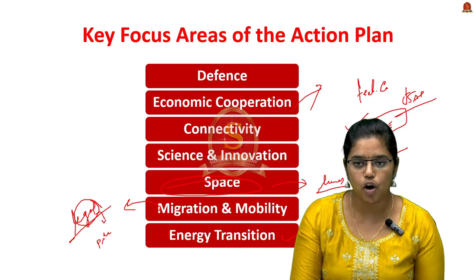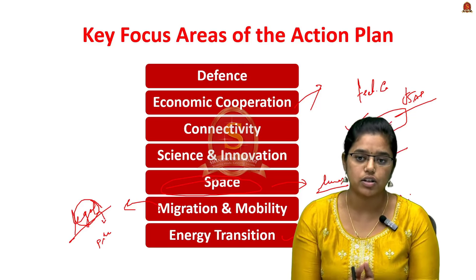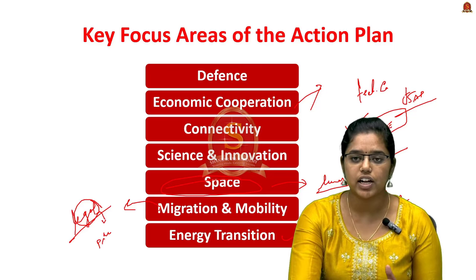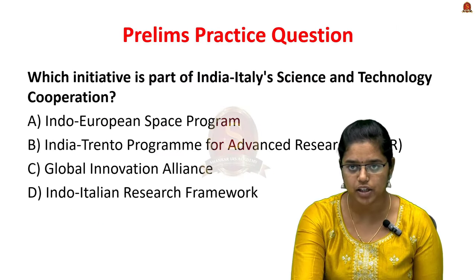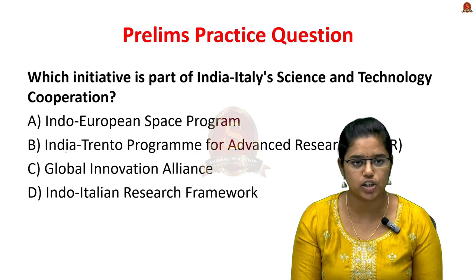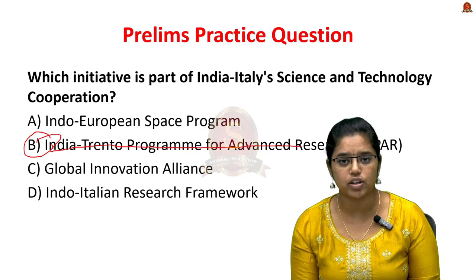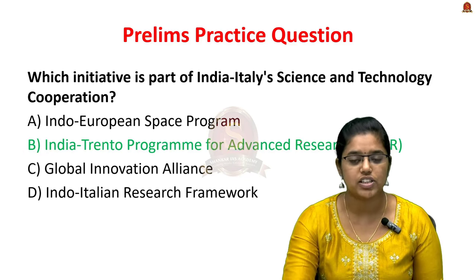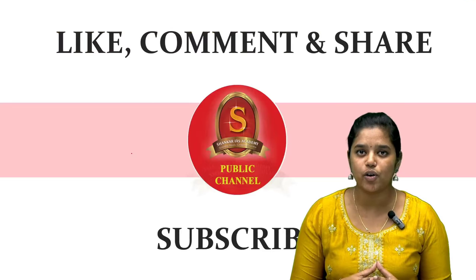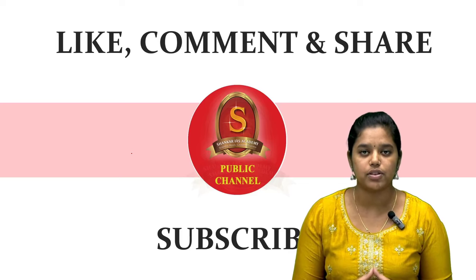In this discussion we covered the focus areas of the India-Italy Joint Strategic Action Plan and the basics of their bilateral relationship. A prelims practice question: 'Which initiative is part of India-Italy science and technology cooperation?' The answer is B — the India Trento Program for Advanced Research (ITPAR). With this we conclude today's video. If you found the video informative, please hit like, give your feedback in the comments, and don't forget to subscribe. Thank you, have a nice day.